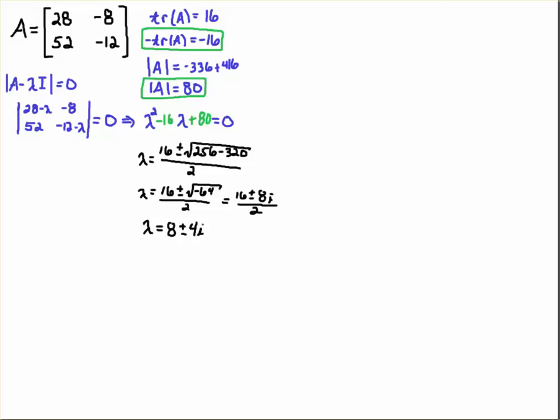Those are your eigenvalues for the system. When you have complex eigenvalues, they will always show up in what we call conjugate pairs. Conjugate pairs means if you get an 8 plus 4i, you'll get an 8 minus 4i.